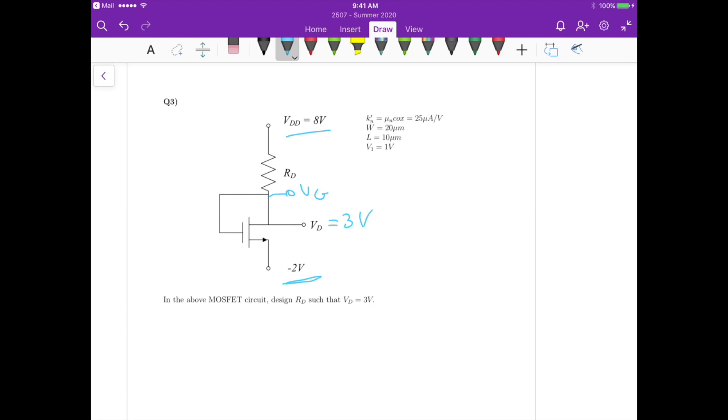Also we know that the process transconductance is 25 microamperes per volt, and it should be squared here. The width of the channel is 20 micrometers, the length is 10 micrometers, and then the threshold voltage, it should be VT here, it's 1 volt.